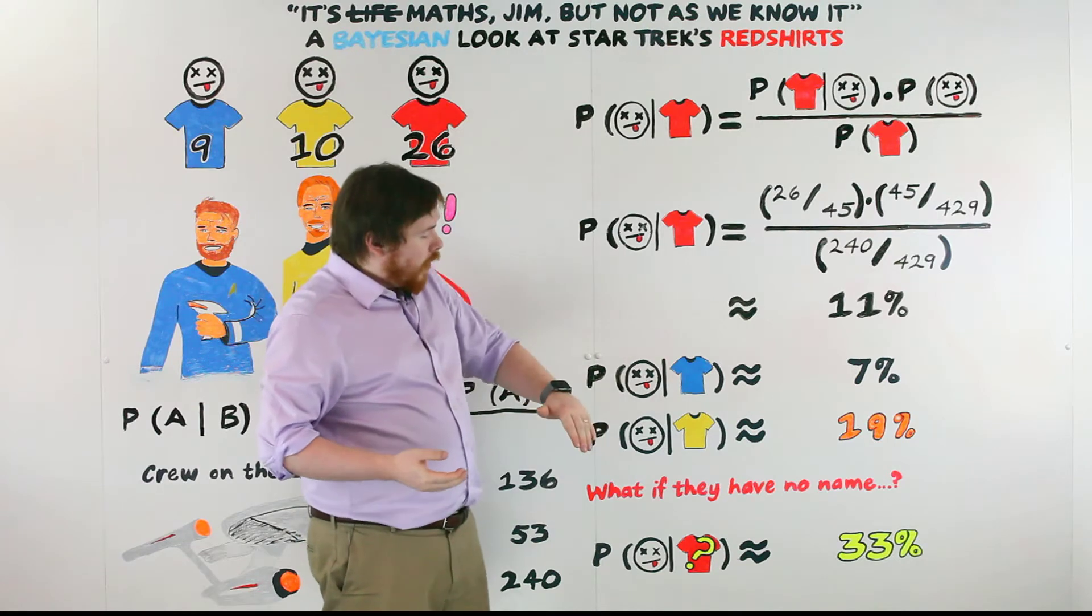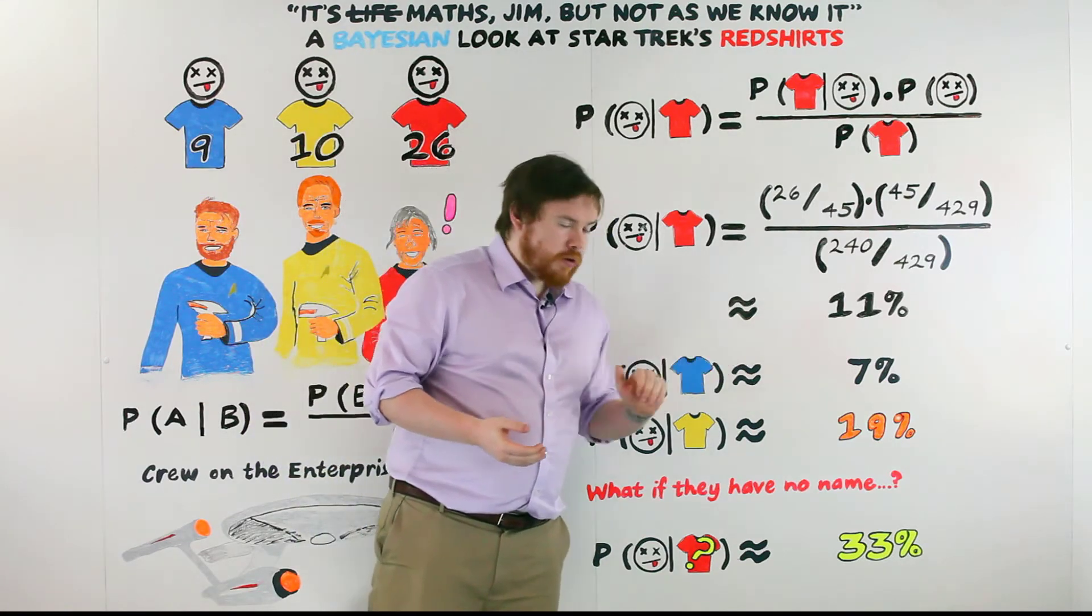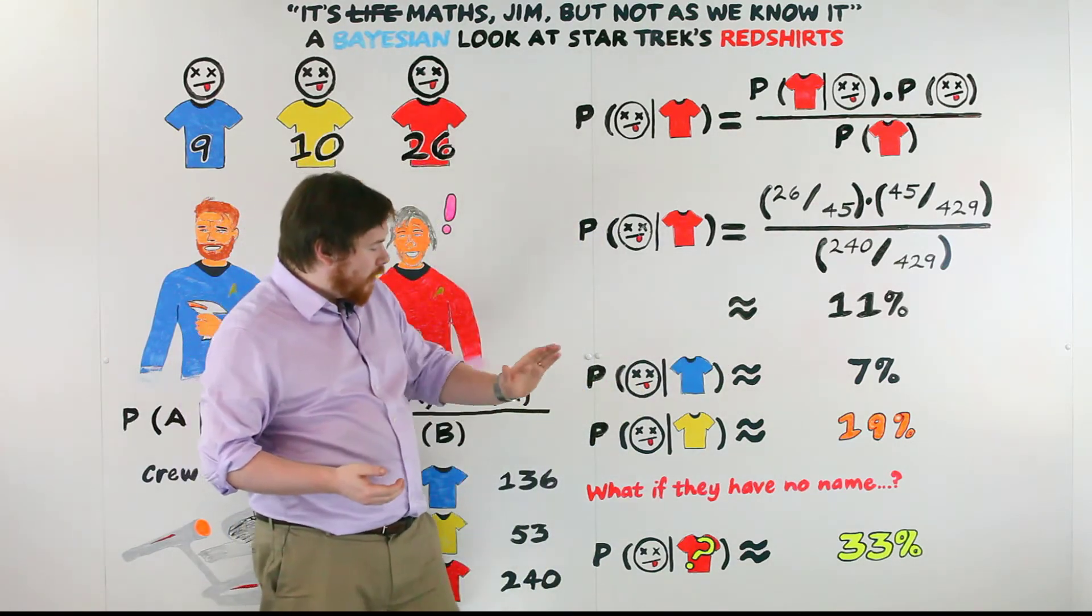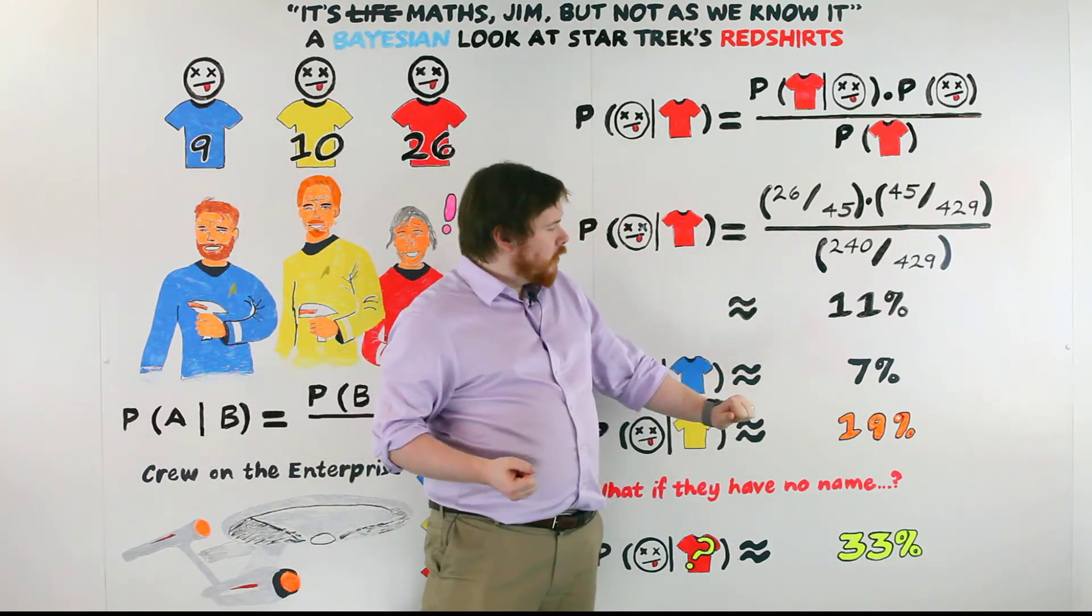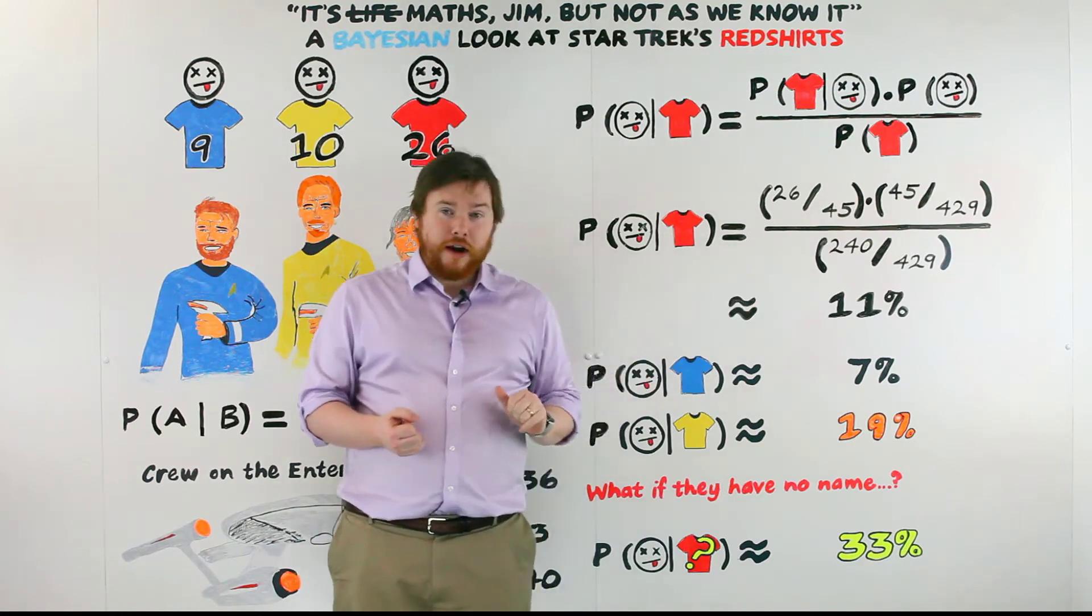If you calculate for the other colors, then the blue shirt comes out at about 7%, and then the command gold comes out at 19%. They're actually nearly twice as likely to meet their end compared to the red shirts.